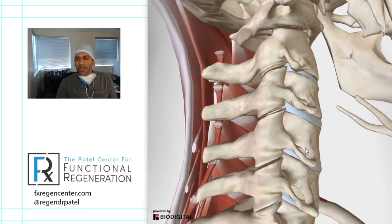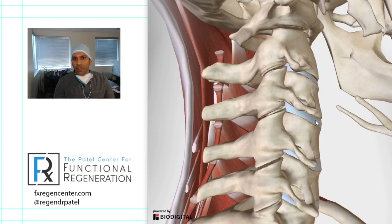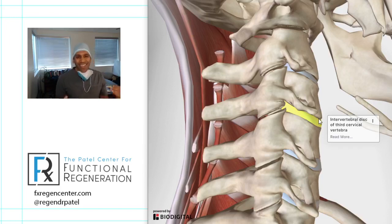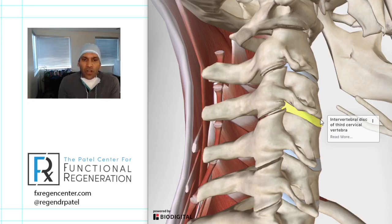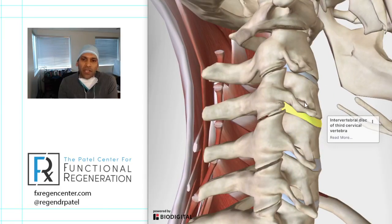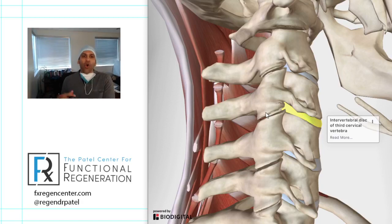As we get older, that disc — that water balloon — starts to lose some of its fluid and gets dehydrated. That's called disc degeneration. As that dehydration occurs, it does not necessarily cause pain; it's a normal thing as we get older. But there's a little bit of wobbliness, a little bit of micro-motion that takes place at that disc over time, which ultimately causes some friction at the facet joints. As friction takes place on any joint, the smooth surface called cartilage starts to wear away.